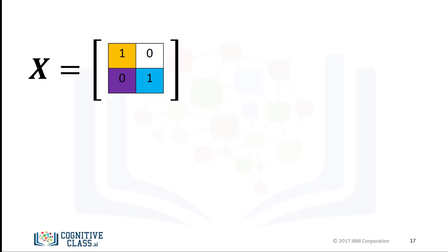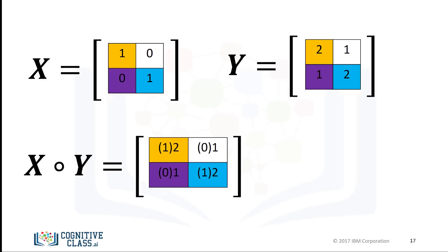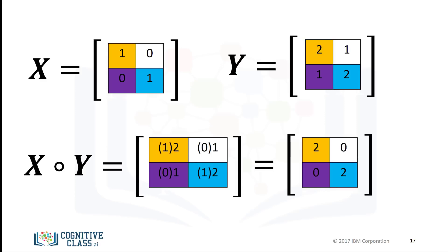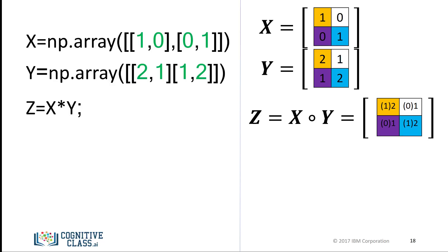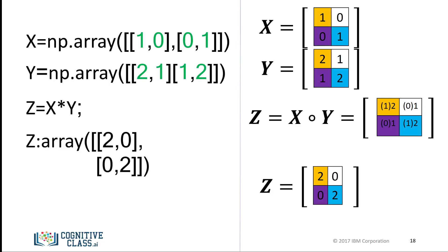Multiplication of two arrays corresponds to an element-wise product, or Hadamard product. Consider array X and array Y. The Hadamard product corresponds to multiplying each of the elements in the same position, i.e. multiplying elements contained in the same color boxes together. The result is a new matrix that is the same size as matrix X or Y. Each element in this new matrix is the product of the corresponding elements in X and Y. We can find the product of two arrays X and Y in one line and assign it to the variable Z. The result is identical to the Hadamard product.